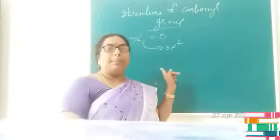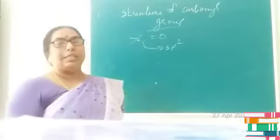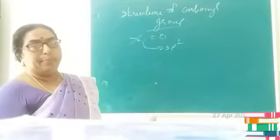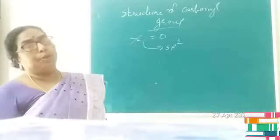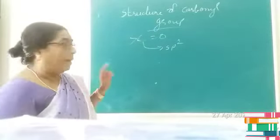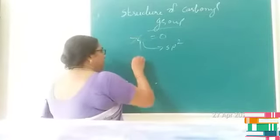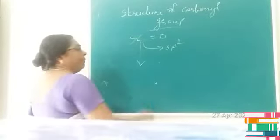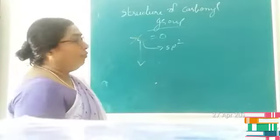Carbon in the carbonyl group undergoes sp2 hybridization, so it is able to form three sigma bonds. The fourth valence electron in carbon remains in the p orbital.